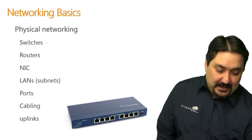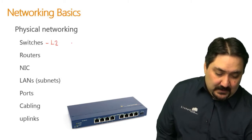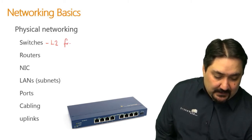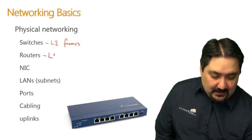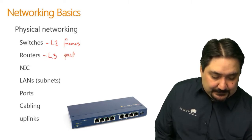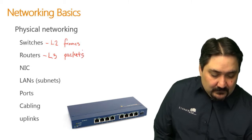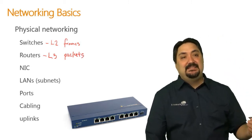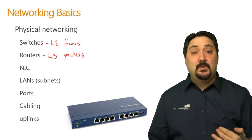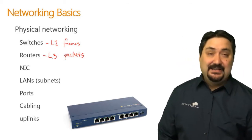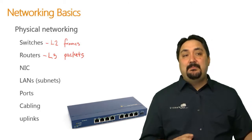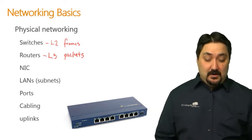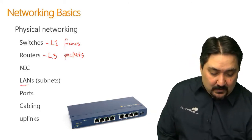Switches work at the layer 2 level and they're focused on the movement of frames. Routers work at the layer 3 level and are focused on the movement of packets. When our router receives the packet and sends it down towards a switch, it actually encapsulates that packet inside a frame, so that frame can then be moved along our local area network or our subnet.